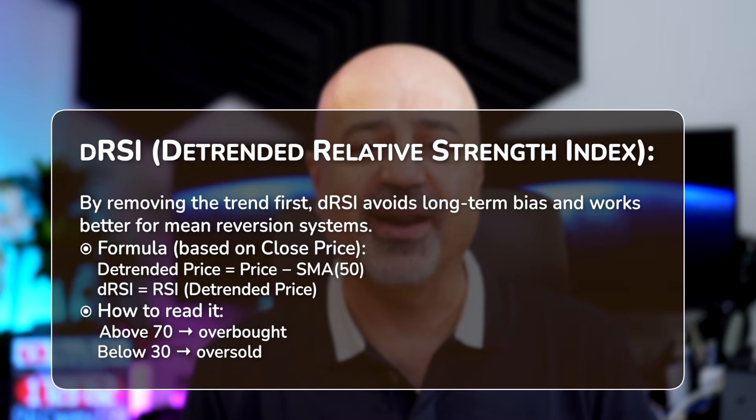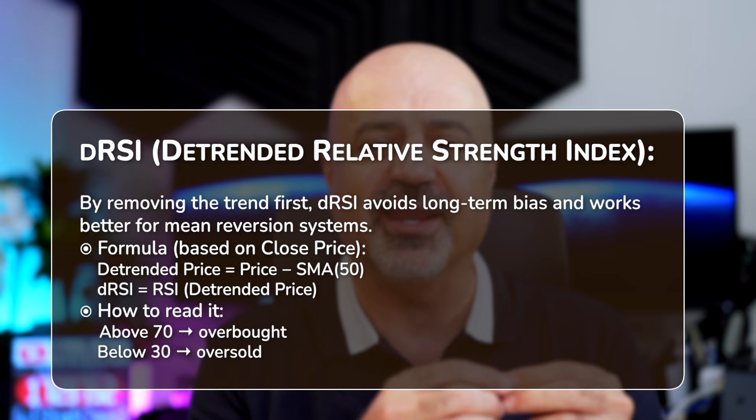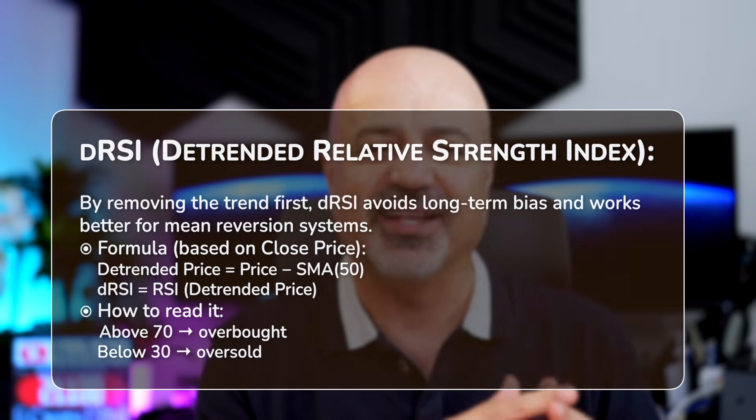I didn't invent de-trending — it's there in math and statistics, and there are many ways to do it. I will use a simple method just to illustrate the difference. De-trending is just removing the trend. We can easily do this by subtracting the price close from a moving average. You can have different look-back periods for this moving average, but when you do that you are actually removing this upward drift from the market.